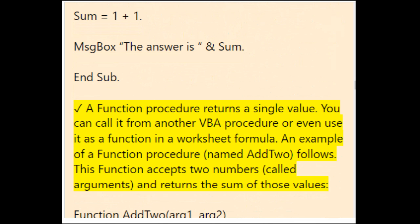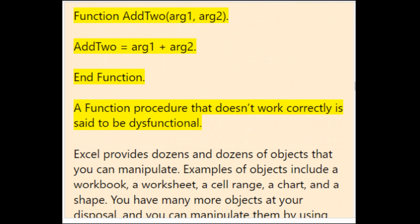A function procedure returns a single value and can be called from another VBA procedure or used as a function in a worksheet formula. For example, a function named Add2 accepts two arguments and returns their sum: Function Add2(arg1, arg2) / Add2 = arg1 + arg2 / End Function. A function procedure that doesn't work correctly is said to be dysfunctional.